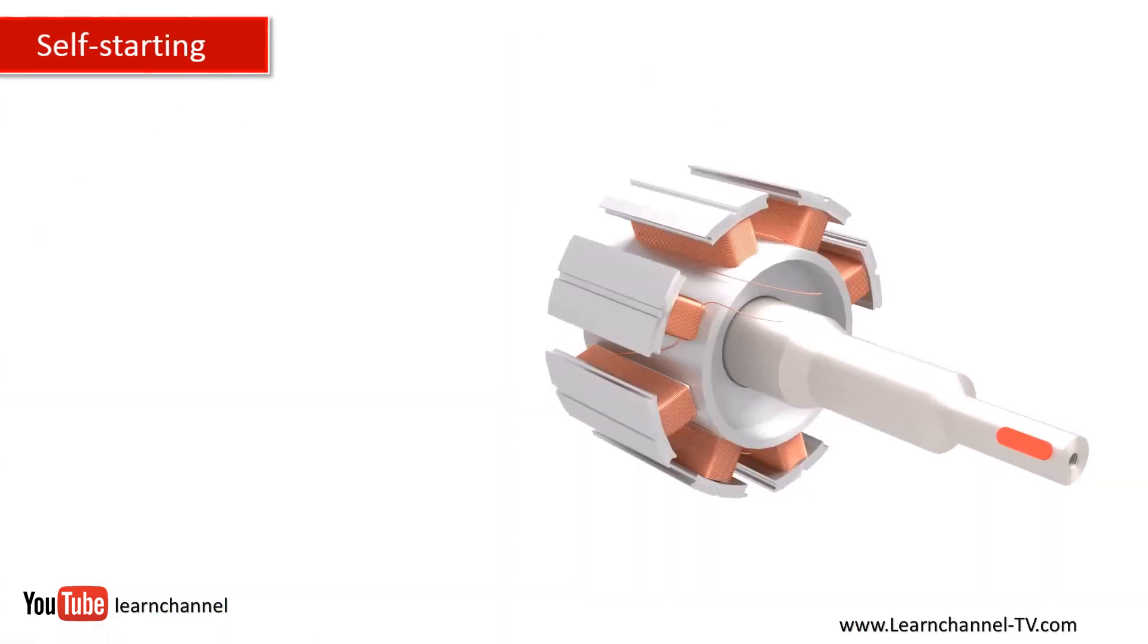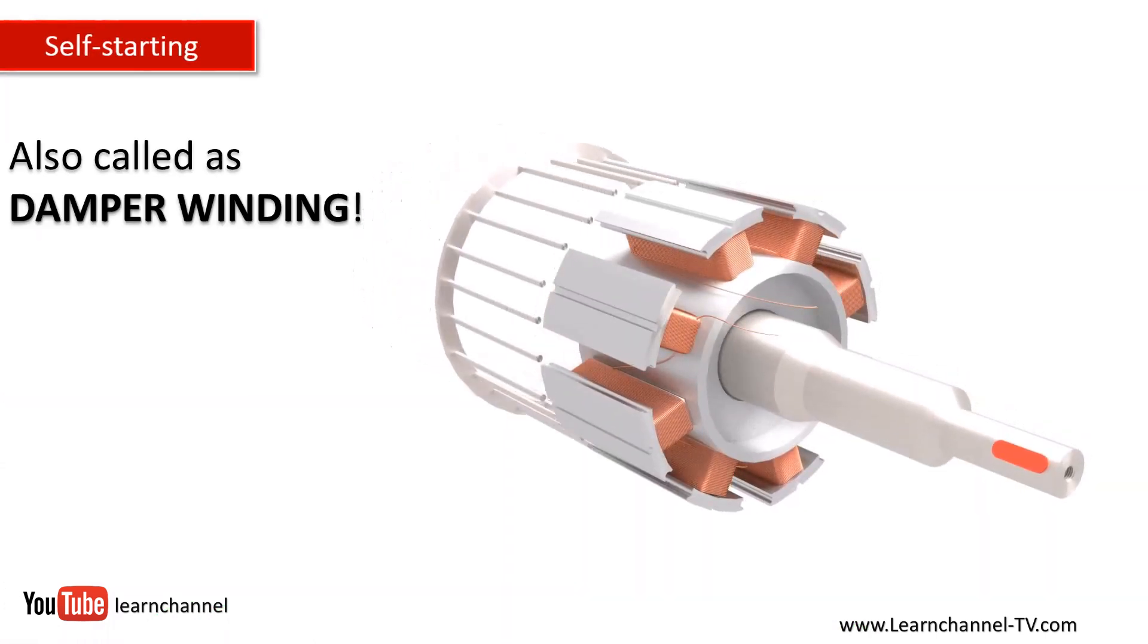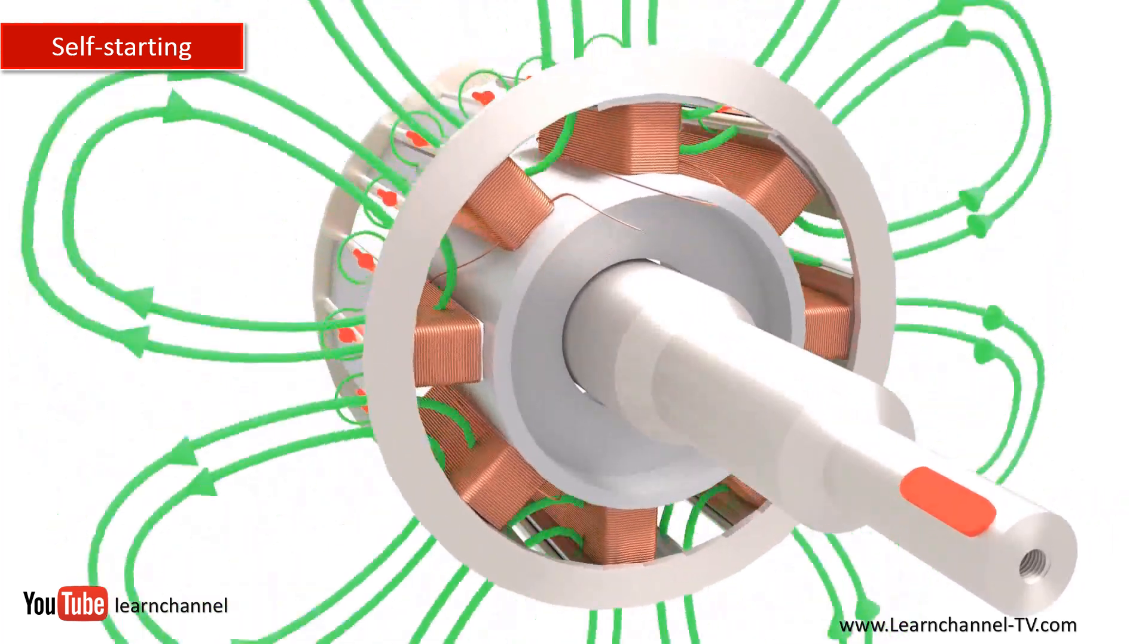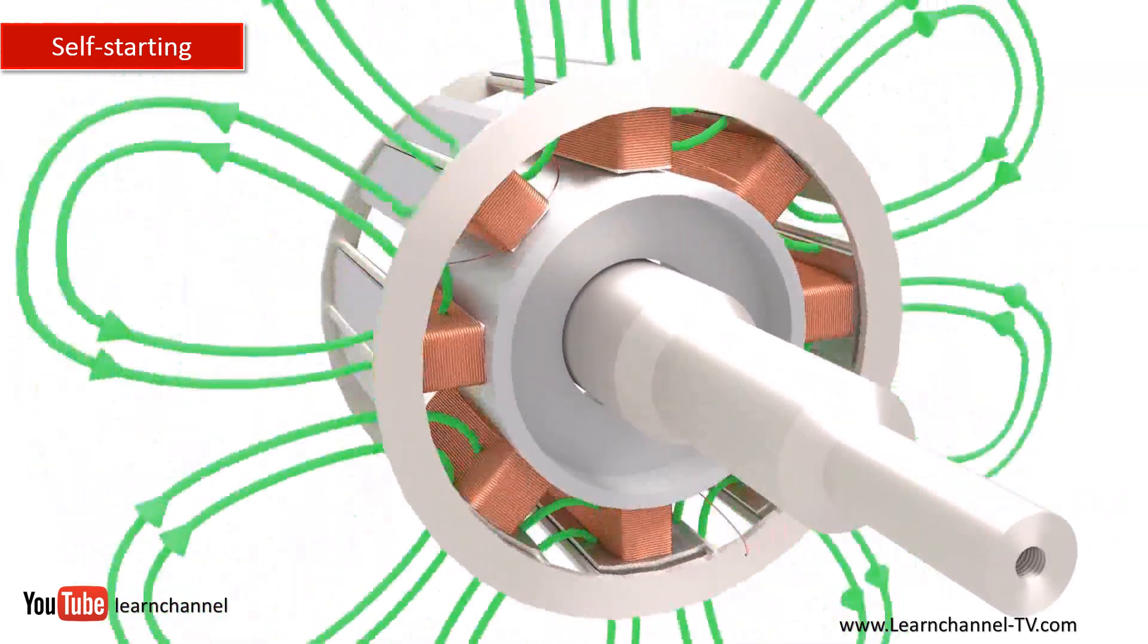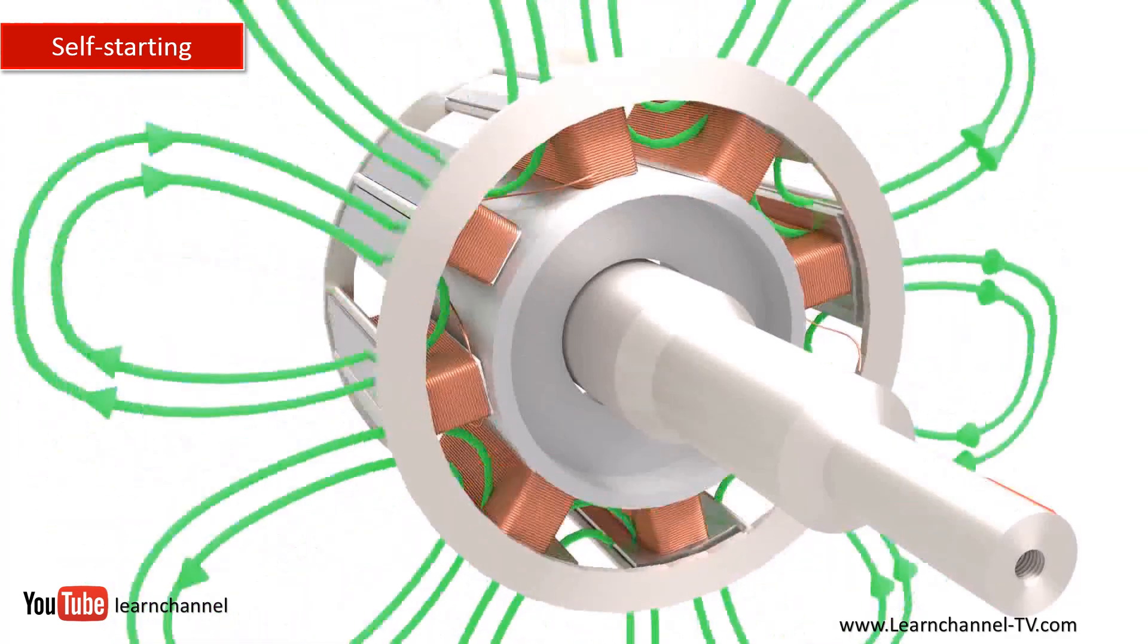To make this motor able to self-start, a squirrel cage is fitted within the pole tips. The RMF induces voltage within the squirrel cage bars and the motor starts just like an induction motor.